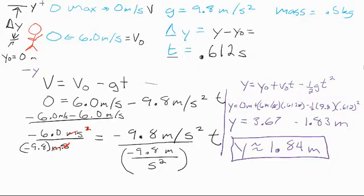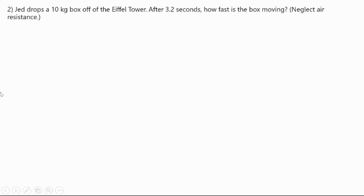So Jed, we want to go back to this one. What the heck happened there? Jed drops a 10 kilogram package off the Eiffel Tower. After 3.2 seconds, how fast is it going?